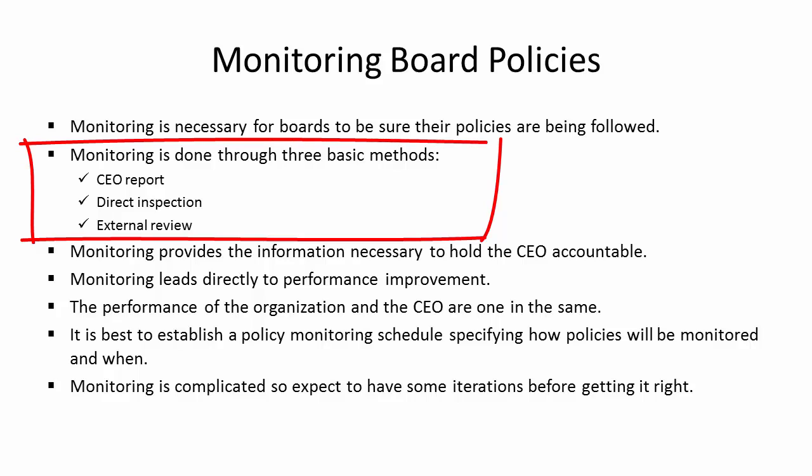The three basic monitoring methods that boards use: the first and most common is a CEO report, where the CEO interprets the board policy in operational terms and provides information and data to show whether they are meeting the policy or not. The second is direct inspection, where the board or a member of the board checks to see whether a policy is being followed.